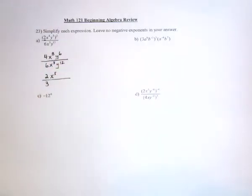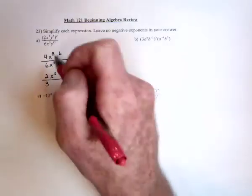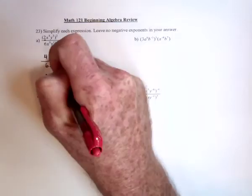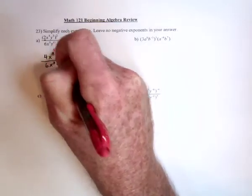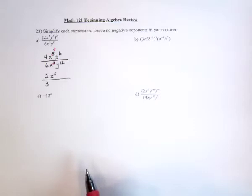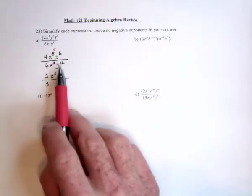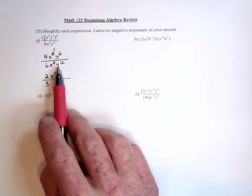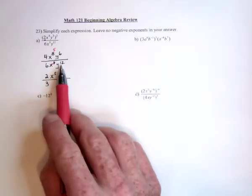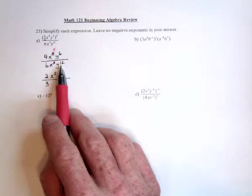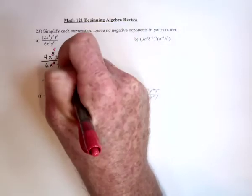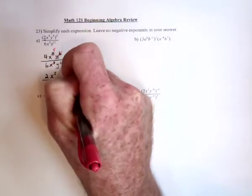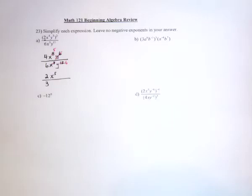Or the way that I like to look at it is, 3 of these can cancel 3 of these, and it leaves 5 of them behind. So, doing this with the y values, what I would do is say, there's 12 of them down there, so there's more in the denominator, so that means that in the answer, the y's are going to be in the denominator. And these 6 of them can cancel out 6 of these. So it leaves 6 of them behind.